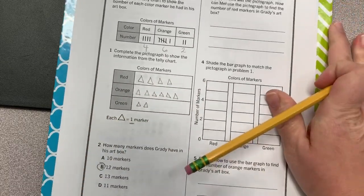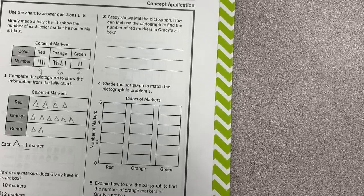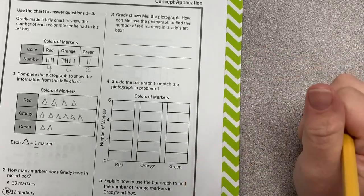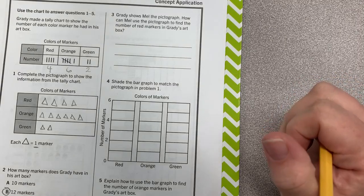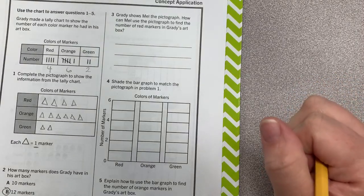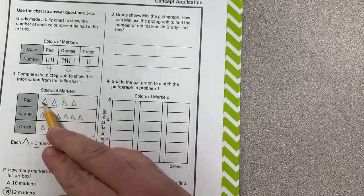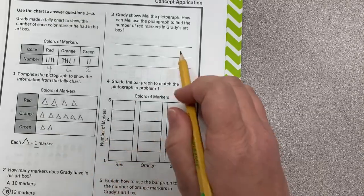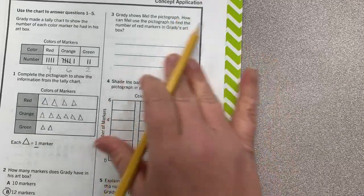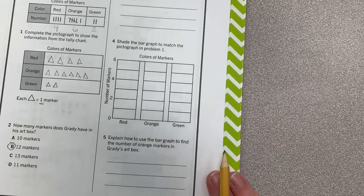Number three, Grady shows Mel the pictograph. How can Mel use the pictograph to find the number of red markers in Grady's art box? Think about it. That's right. She can count the symbols or count the triangles. So use your best handwriting to answer that in a complete sentence. I want to see what you're going to write.